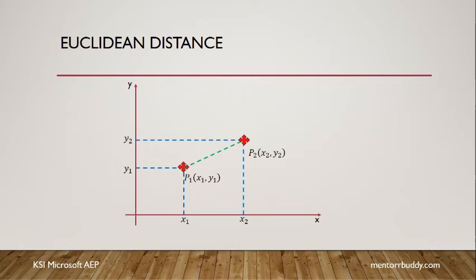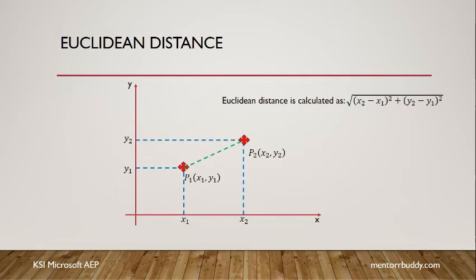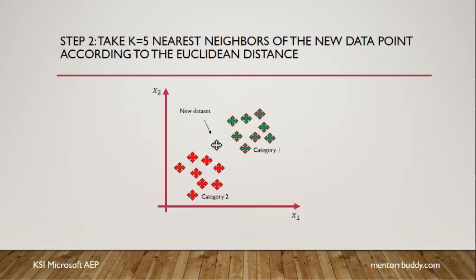Step two is to calculate the nearest neighbors using the Euclidean distance. The formula is: √((x2 − x1)² + (y2 − y1)²). One point is the new data point entered, and the other points are the training data already provided. We calculate distances to the data points and take the five nearest neighbors.